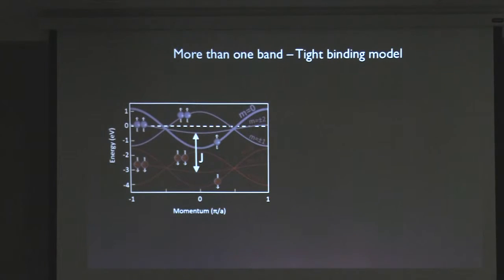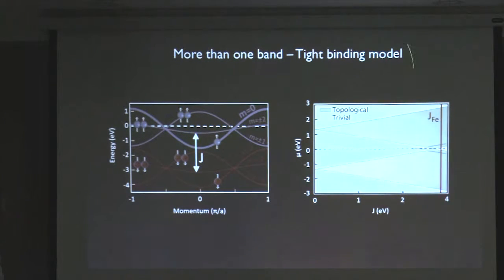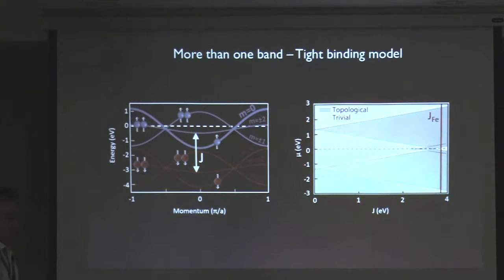What is nice is that this approach works not just for a single band but for several bands as well. In a tight-binding calculation with a realistic iron having five bands, if the exchange coupling is large and you split the spin-up and spin-down bands, you can still have a situation where your Fermi level crosses an odd number of bands. This gives a phase diagram where, depending on chemical potential and exchange coupling, you are either in a topological or trivial phase.